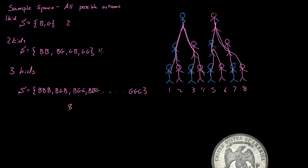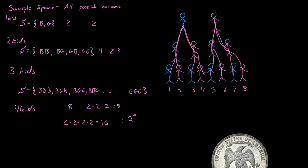So this one was two, this one was four, and this one was eight. So if we wanted four kids, all we have to do is multiply eight by two. We had two, then two times two, then two times two times two which is eight. Four kids is two times two times two times two, which is 16. Or simply, two to the number of kids. So if we wanted a hundred, you could find the sample space size by two to the n, and that's for kids.